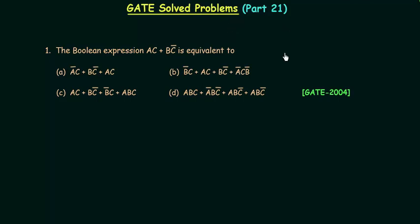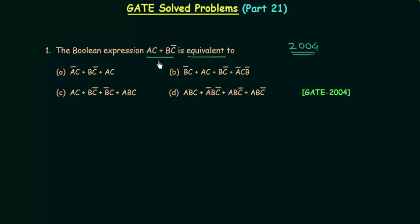In this part we have to deal with Boolean algebra problems that appeared in the GATE 2004 exam. In the first problem, the Boolean expression AC or BC complement is given and we have to find the equivalent of this Boolean expression.